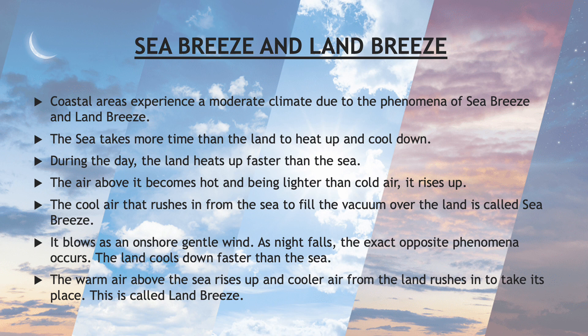Sea breeze and land breeze. Coastal areas experience a moderate climate due to the phenomena of sea breeze and land breeze. The sea takes more time than the land to heat up and cool down. During the day, the land heats up faster than the sea. The air above it becomes hot and, being lighter than cold air, it rises up. The cool air that rushes in from the sea to fill the vacuum over the land is called sea breeze. It blows as an onshore gentle wind.